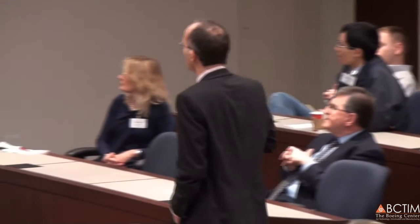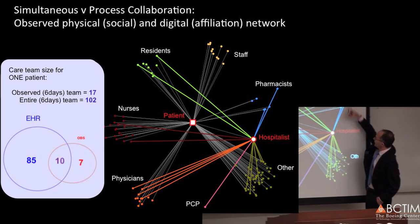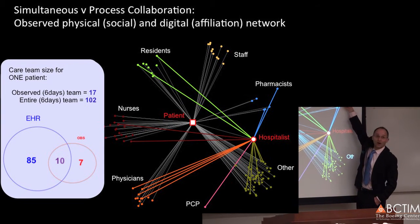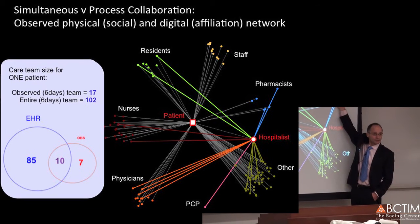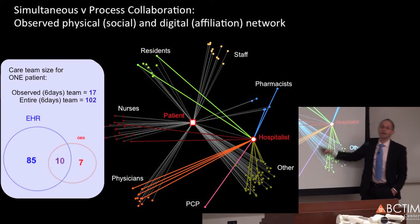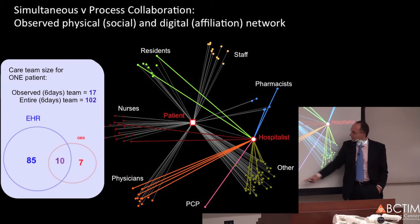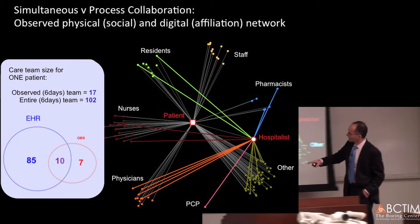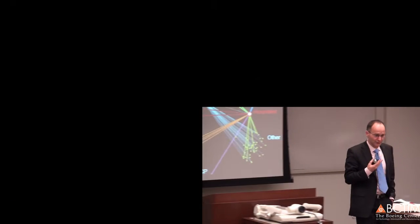If you look carefully, there are a few interactions missing from the electronic health record. This reach-out to a pharmacist is not in the electronic health record. This discussion with the primary care physician is not in the electronic health record, and I think there are some others — like with this physician also. That's interesting and begs the question: what is the overlap between the two data sets?